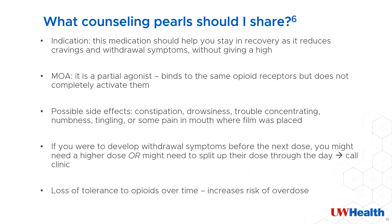Patient counseling in this situation is very important, and even though it may be an awkward conversation to have, it is important so we can convey the necessary information and the patient is aware of the risks and benefits. I'm going to walk through some things as an example of what we can say. Starting off with the indication, we could say something like: 'This medication should help you stay in recovery as it reduces cravings and withdrawal symptoms without giving a high. It is a partial agonist, which means that it binds to the same opioid receptors but does not completely activate them.' Some side effects include constipation, drowsiness, trouble concentrating, numbness, tingling, or some pain in the mouth where the sublingual film is placed.